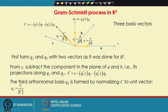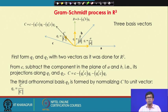The Gram-Schmidt process in real coordinate space R³ — we discussed this exactly in the last class. We have 3 vectors A, B, and C which are independent vectors but not mutually orthogonal. The goal of the Gram-Schmidt process is to get a set of mutually orthonormal basis vectors — meaning the vectors should be orthogonal to each other and each vector should have a length equal to unity. We take the first vector A and divide it by its length to get a unit vector Q1.